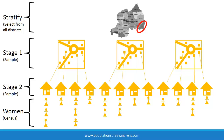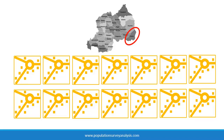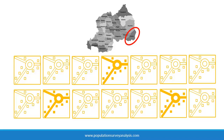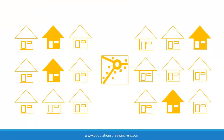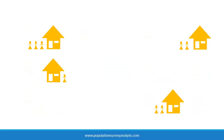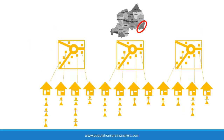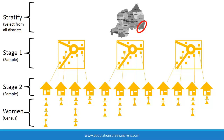A two-stage cluster sampling design is used to sample women in the Demographic and Health Surveys, Multiple Indicator Cluster Surveys, and other similar household surveys. Within strata, all enumeration areas from the last census are listed and then sampled. We call the selected enumeration areas clusters, or primary sampling units (PSUs), since they are units of the first-stage sample. Within PSUs, all households are listed and then sampled — these are secondary sampling units (SSUs). A census of all eligible women is then performed within the sampled households, making this a two-stage cluster sample with enumeration areas in stage 1 and households in stage 2. If we randomly sampled one woman per household rather than interviewing all eligible women, this would become a three-stage cluster sample design.